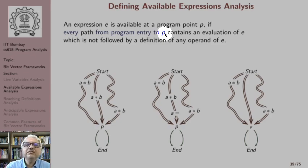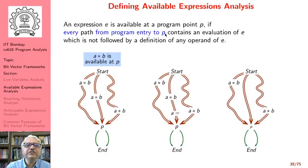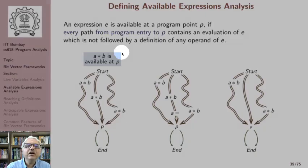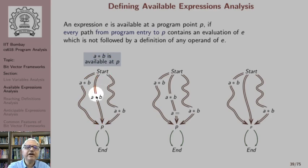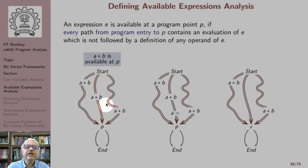To examine availability of expressions, in the first example, expression a*b is available because along one path it is computed and neither a nor b has been modified. For the second path, a*b is computed and after this computation neither a nor b is modified until p. In the third path also, there is a computation of a*b not followed by a modification of a or b. Therefore, the expression a*b is available at program point p.